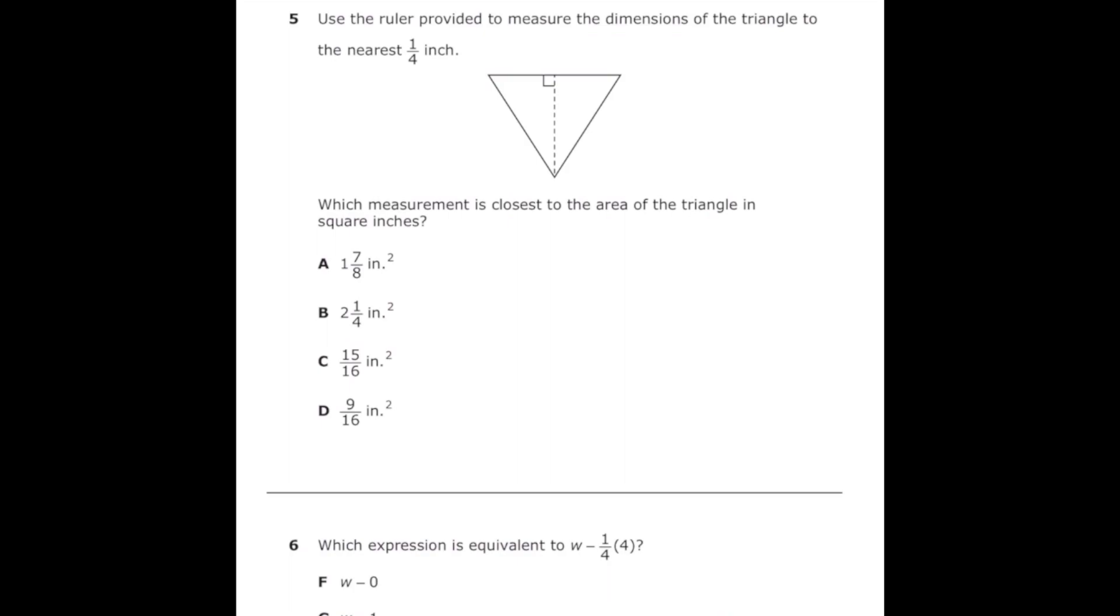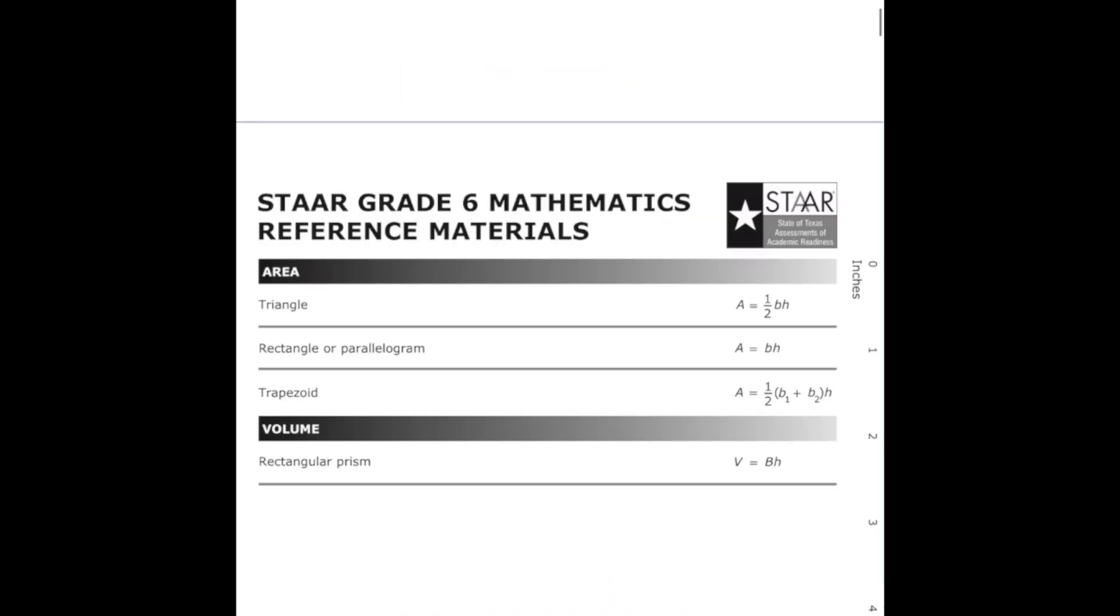Number 5 from the 2022 sixth grade math STAR test says use the ruler provided to measure the dimensions of the triangle to the nearest quarter inch. Which measurement is closest to the area of the triangle in square inches? If I check my reference sheet, I know that the area of a triangle is equal to one half times base times height.